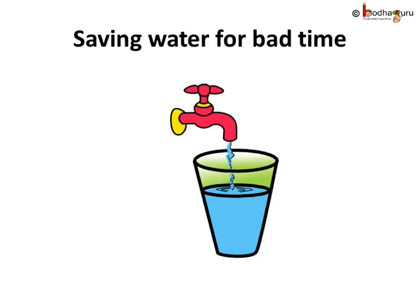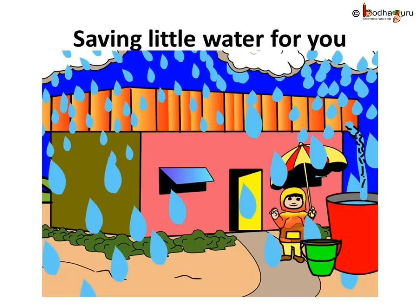How do we do that? As a kid, you can help too. Rain water can be collected in small buckets and used to water plants, or wash your bicycle, or even your father's motorcycle or car. Wouldn't it be fun?